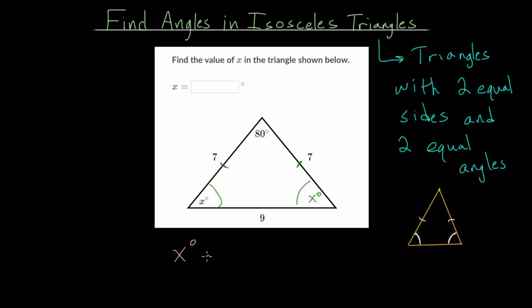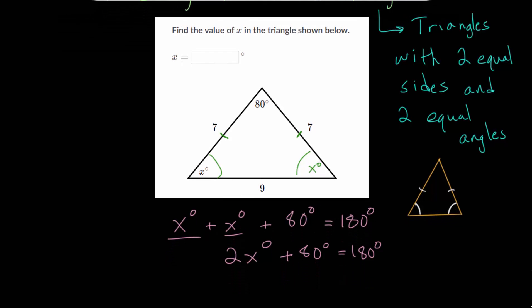So we have X degrees plus X degrees plus 80 degrees. This is equal to 180. And we can combine like terms. Let's put the two X's together. So we have twice this angle measure of X plus 80 degrees is equal to 180. And let me just make some room so we can finish this.